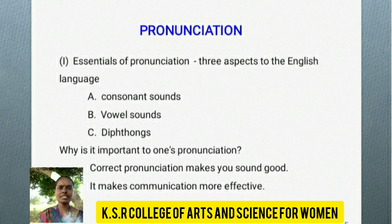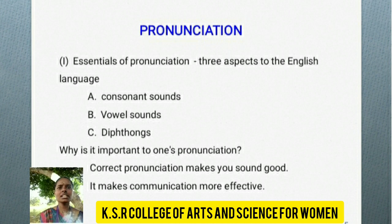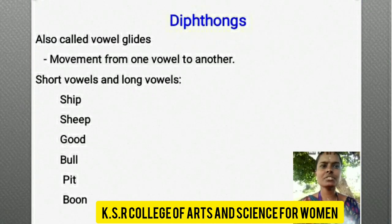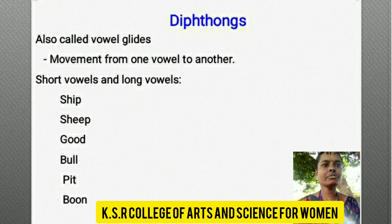The three aspects of language sounds: consonant sounds, vowel sounds, and diphthongs. Why is it important to improve one's pronunciation? Correct pronunciation makes you sound good and makes communication more effective. Diphthongs, also called vowel glides, involve movement from one vowel to another. We also look at short vowels and long vowels.